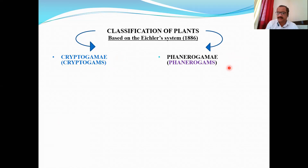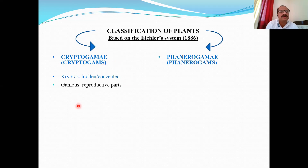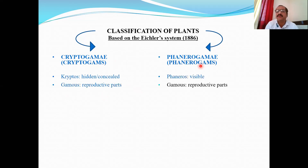These terms are combinations of Greek words. Cryptogams comes from 'cryptos' meaning hidden or concealed, and 'gamus' meaning reproductive parts or marriage. Phanerogams comes from 'phaneros' meaning visible, and 'gamus' meaning reproductive parts or marriage.